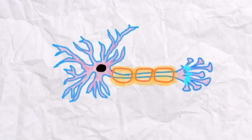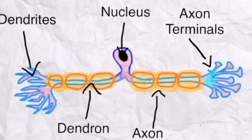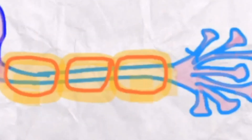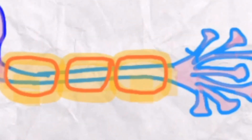A neuron has many different sections. An impulse is received from the dendrites, it travels along the dendron and the axon, and it is passed on to the neighboring neuron via the axon terminals. You may be wondering what the orange circles are — well, those are the myelin sheath. The myelin sheath is made up of fat and plays a big role in neurotransmission.